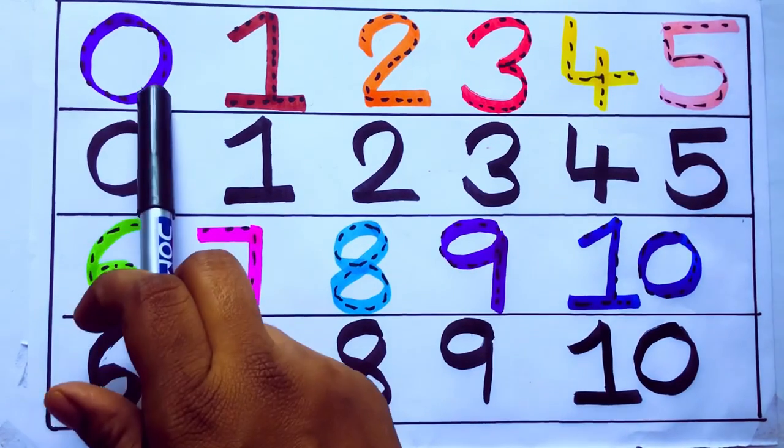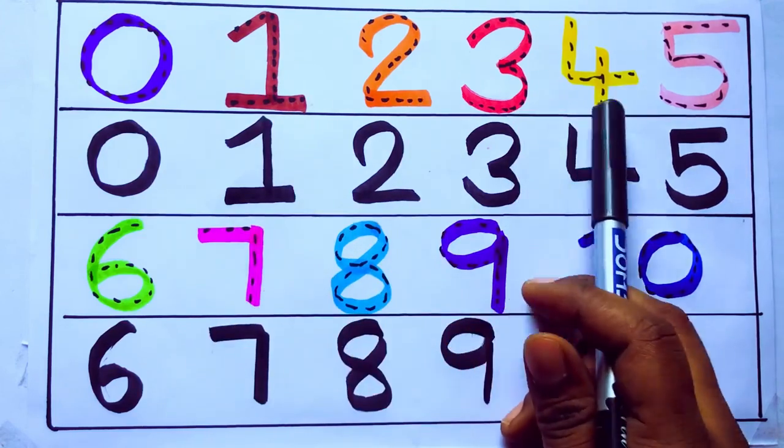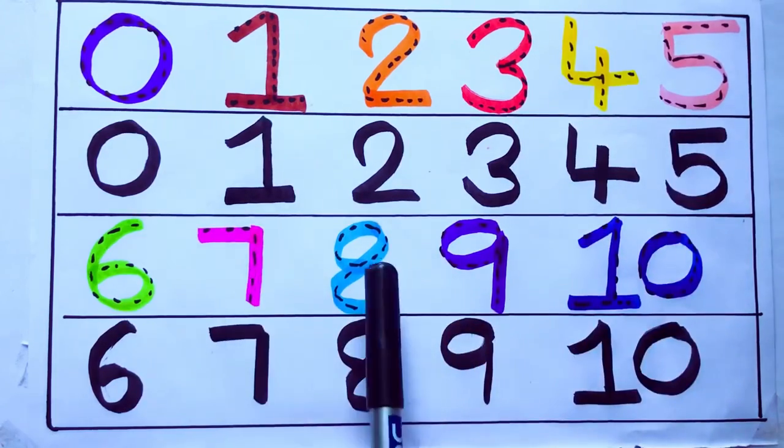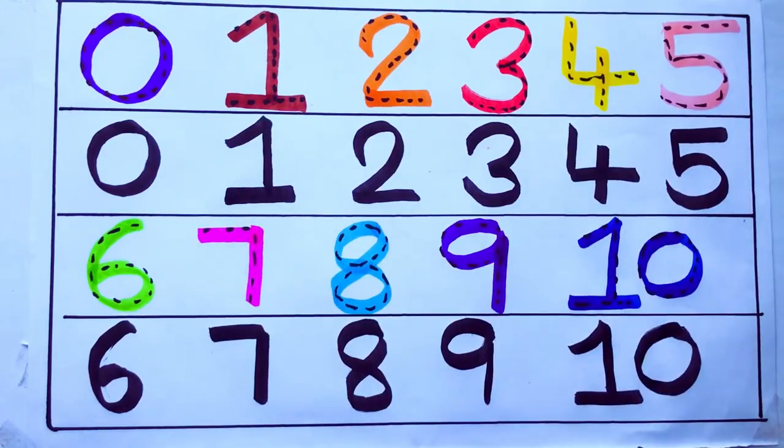Learning numbers: 0, 1, 2, 3, 4, 5, 6, 7, 8, 9, 10. Okay, bye kids.